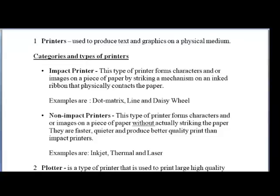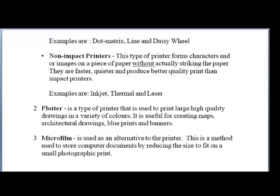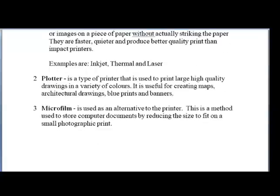Non-impact printers form characters or images on paper without actually striking the paper. They are faster, quieter, and produce better quality print than impact printers. Two examples are inkjet (a popular one you may have at home) and thermal and laser printers. Then we have the plotter — a type of printer used to print large, high-quality drawings in a variety of colors, useful for creating maps, architectural drawings like blueprints, and banners. Some books will call it the plotter printer. There is also the microfilm, used as an alternative to the printer — a method used to store computer documents by reducing the size to fit on a small photographic print.